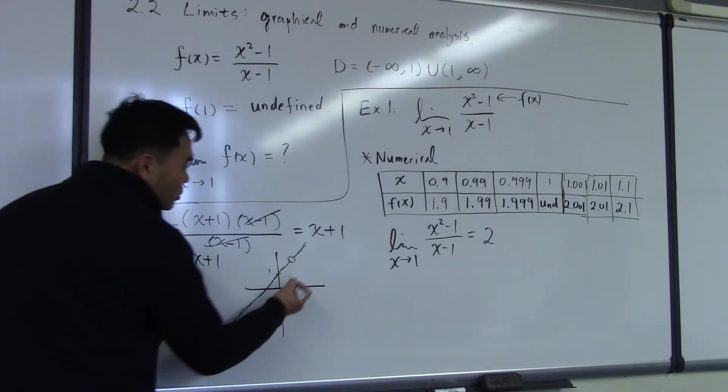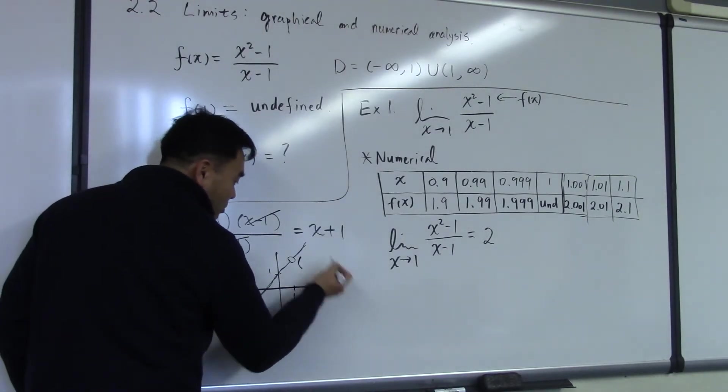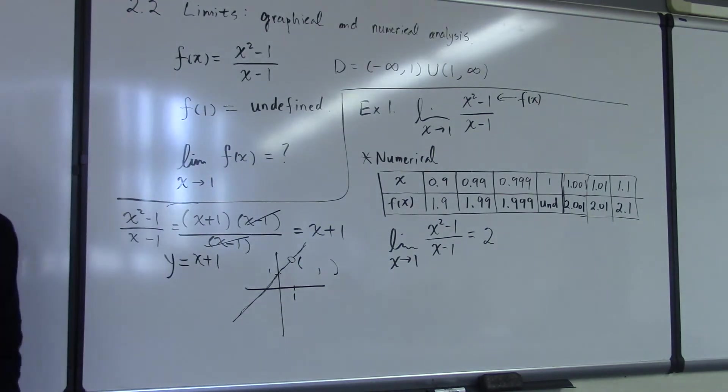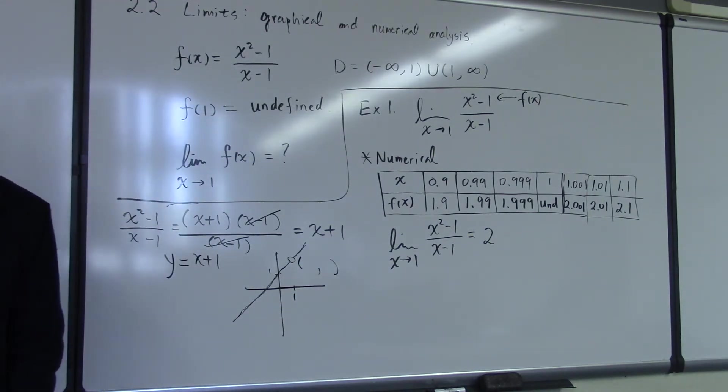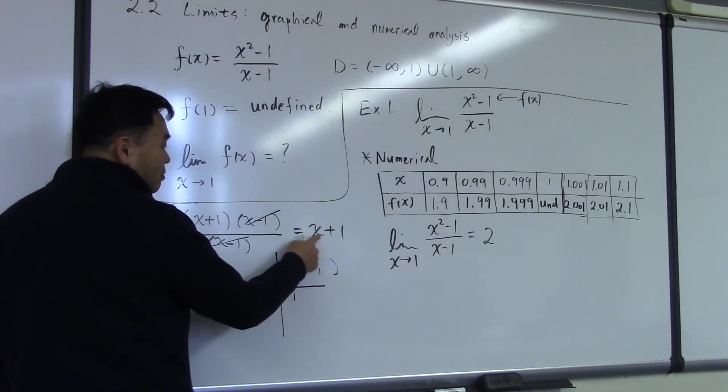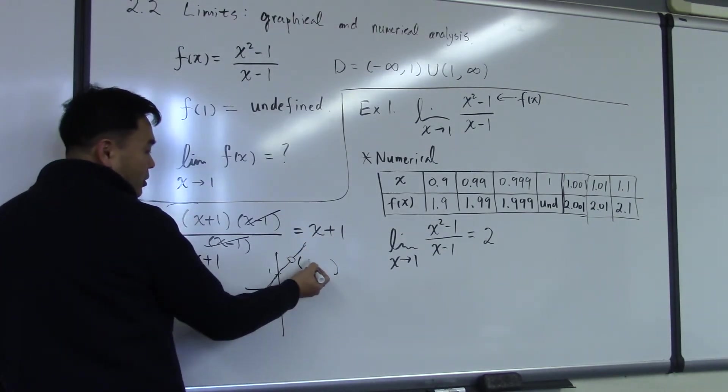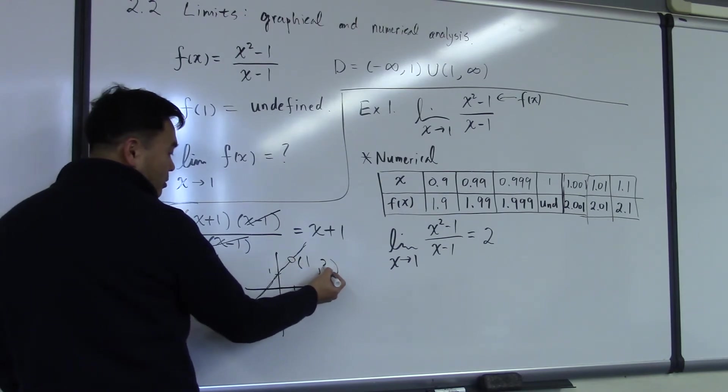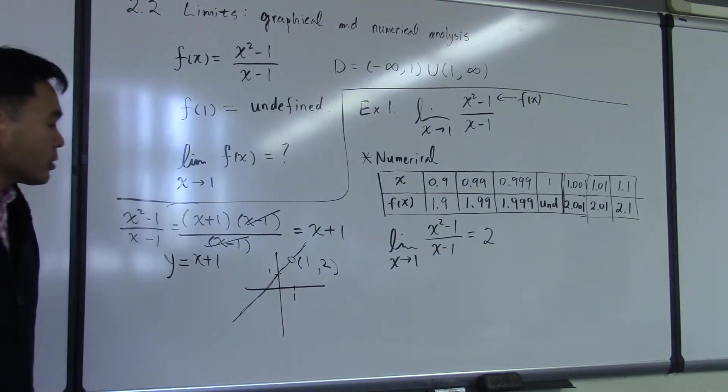There's a hole at 1. Who can tell me the coordinate of this hole? Where is the hole located? 1, 2. Because if you plug in 1 into here, 1 plus 1 is 2. So we know that the hole is at 1, 2.